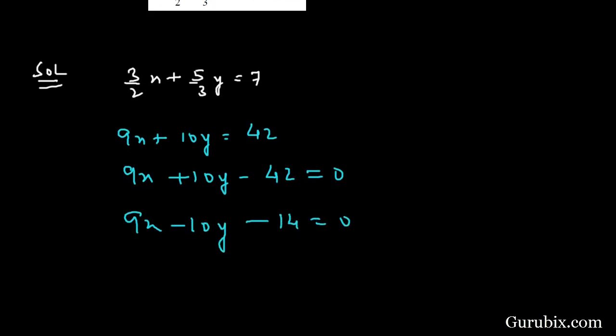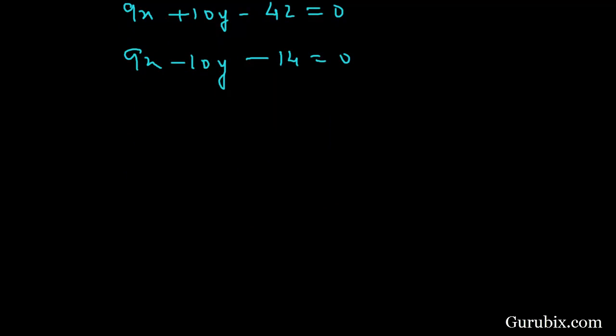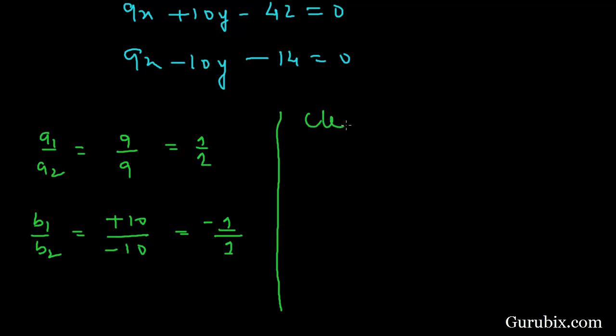Now we can easily calculate the ratios. a1/a2, that is 9/9, which equals 1/1. And if we calculate b1/b2, that equals positive 10 over negative 10, this means -1/1. Here we clearly observe a1/a2 is not equal to b1/b2.